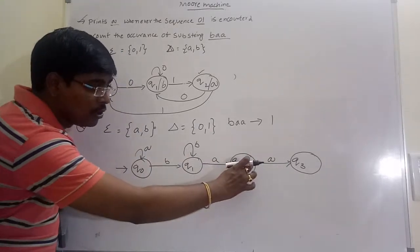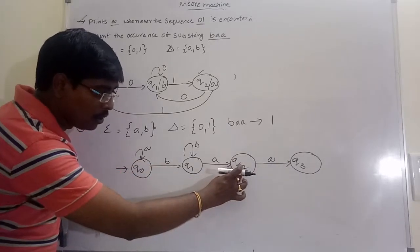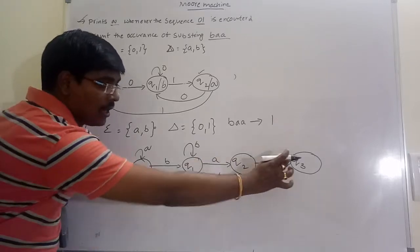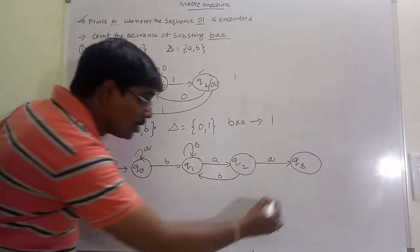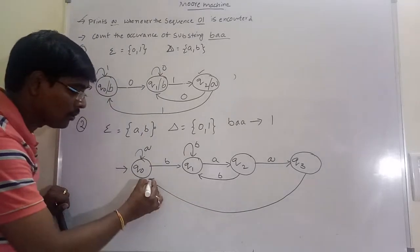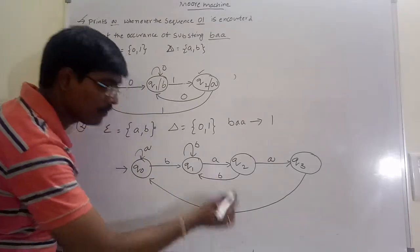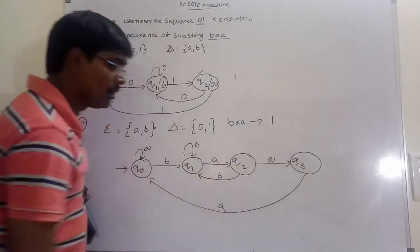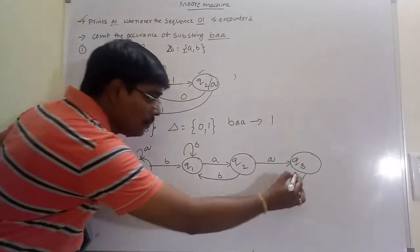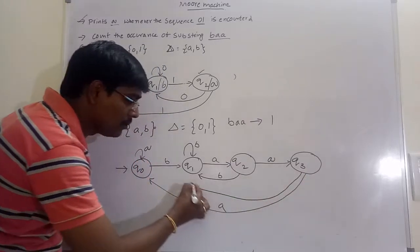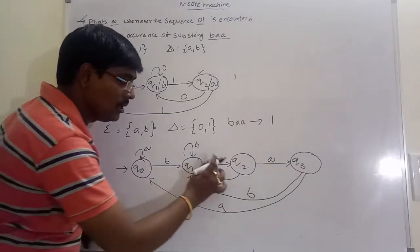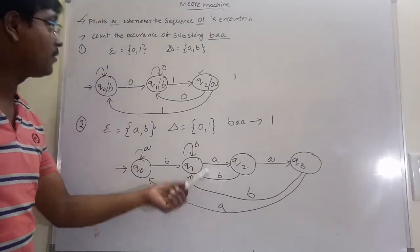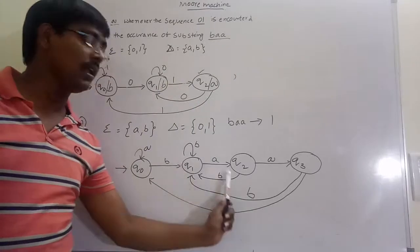Q2 on A goes to Q3 completing BAA; Q2 on B forms the B prefix again. Q3 on A moves to Q0 — it forms BAA. Q3 on B moves to Q1, also forming BAA. This is the finite automata — the deterministic finite automata for the substring BAA.